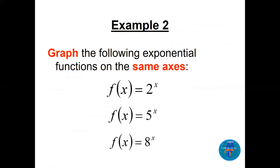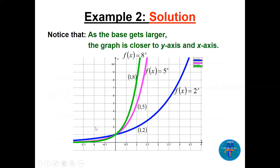If we graph 2ˣ, 5ˣ, and 8ˣ on the same axes, all three are increasing and pass through (0, 1). As the base gets larger — five is larger than two — the graph gets closer to the y-axis on the right side and closer to the x-axis on the left side.